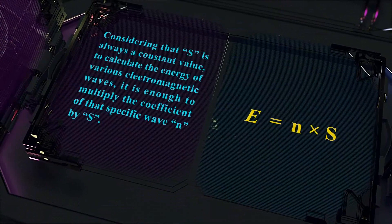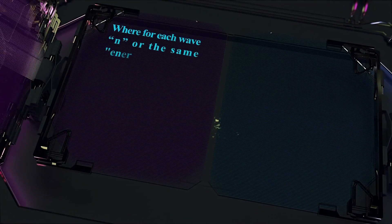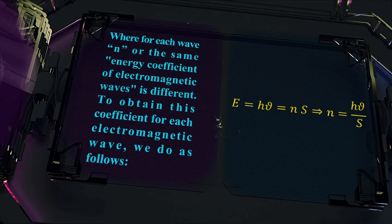Considering that S is always a constant value, to calculate the energy of various electromagnetic waves, it is enough to multiply the coefficient of that specific wave, n, by S, where for each wave, n — the energy coefficient of electromagnetic waves — is different.